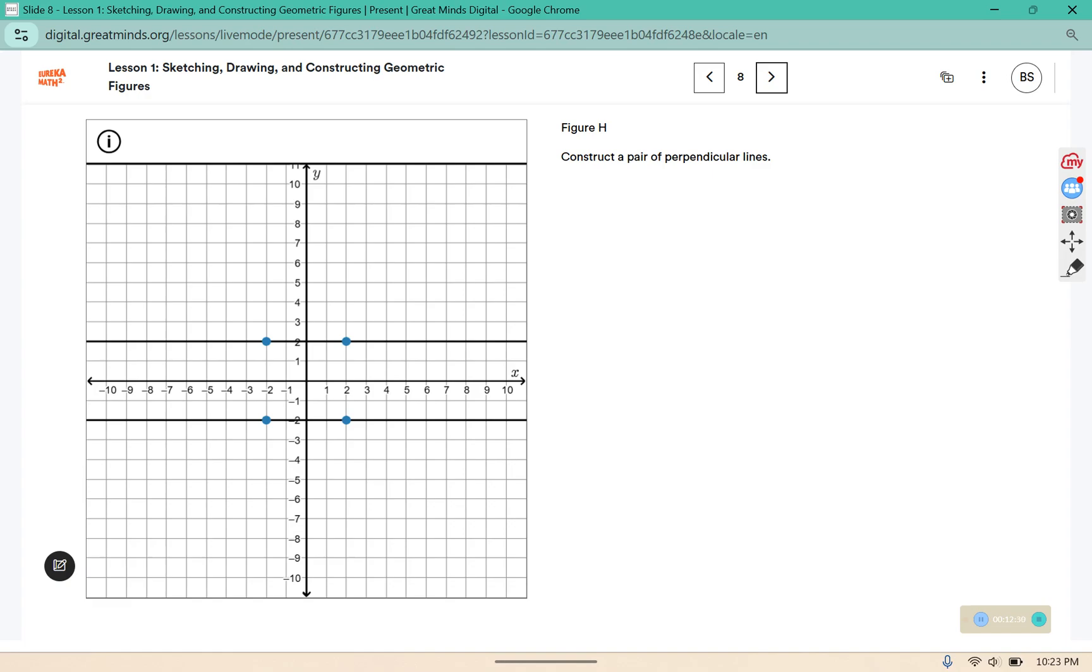Construct a pair of perpendicular lines. Those are the ones that intersect at a 90 degree angle. So you want to see that little 90 degree symbol or the right angle symbol. You have two lines intersecting.